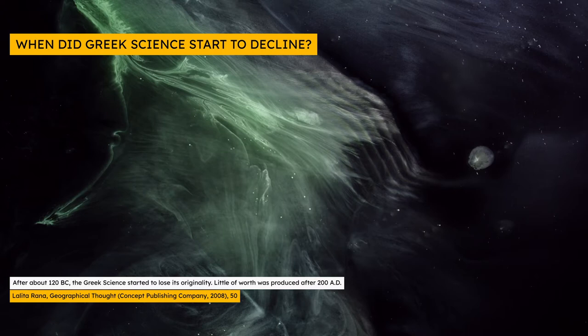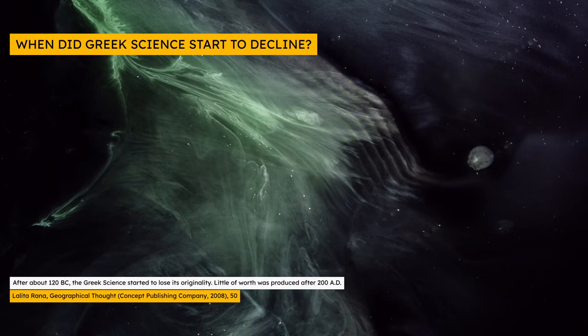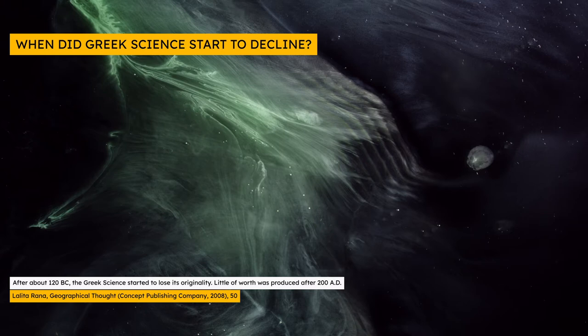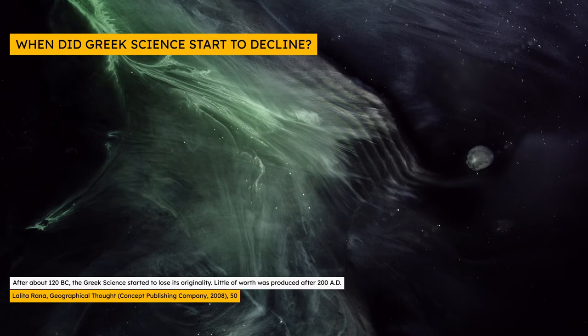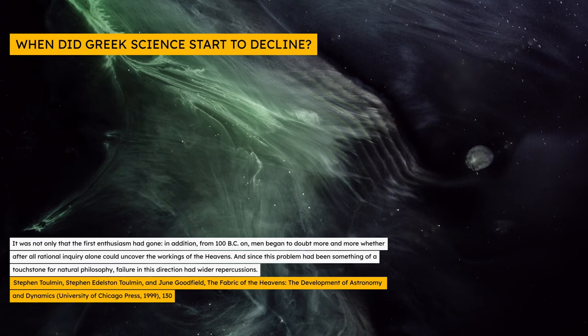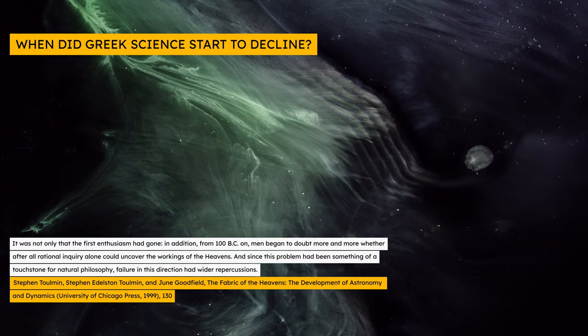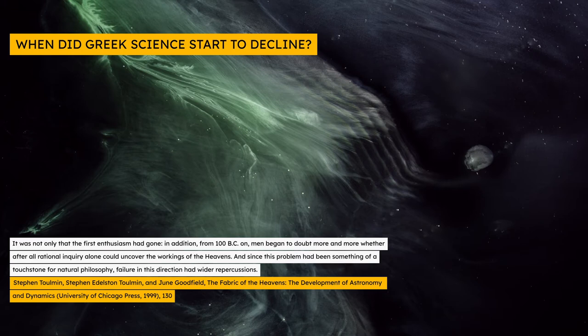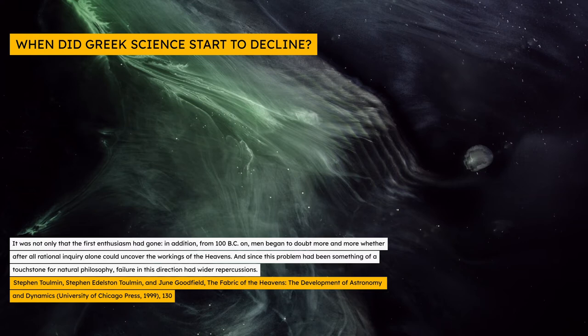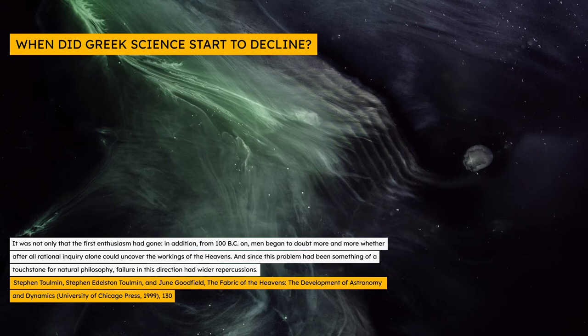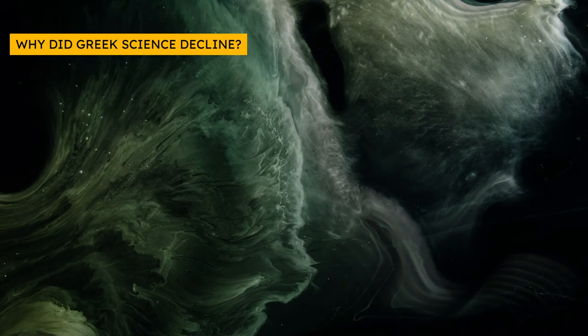Dr. Lalita Rana of the University of Delhi dates the decline slightly later, to around 120 BCE, writing, after about 120 BC, the Greek science started to lose its originality, and adding, little of worth was produced after 200 AD. Philosopher Stephen Toulmin and historian June Goodfield similarly date the decline from 100 BCE. So over the last 40 years, the scholarly consensus among historians of science has been that Greek science was already in decline at least 150 years before Christianity emerged, and that it was virtually dead by the 2nd century of the Christian era, long before Christians had any social impact.